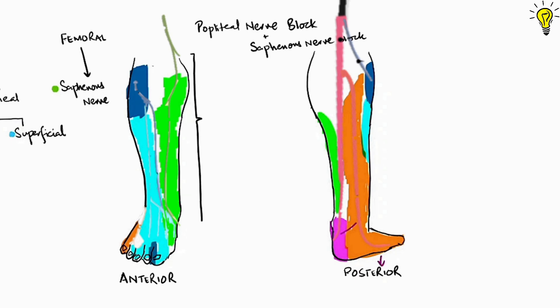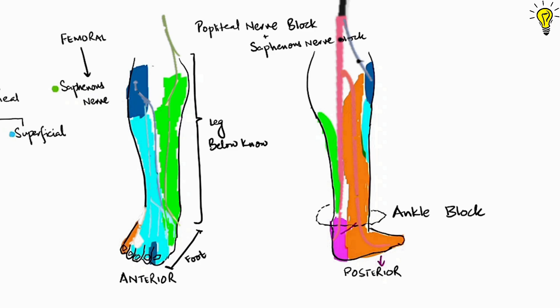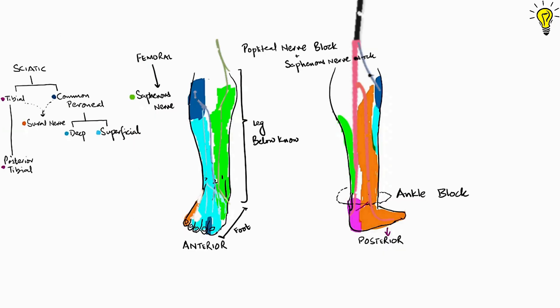To cover the surgery area from below the knee till the toes, we can give a popliteal sciatic block combined with a saphenous nerve field block. For surgeries on the foot, one can also give an ankle block by separately blocking the five nerves coming around the ankle.